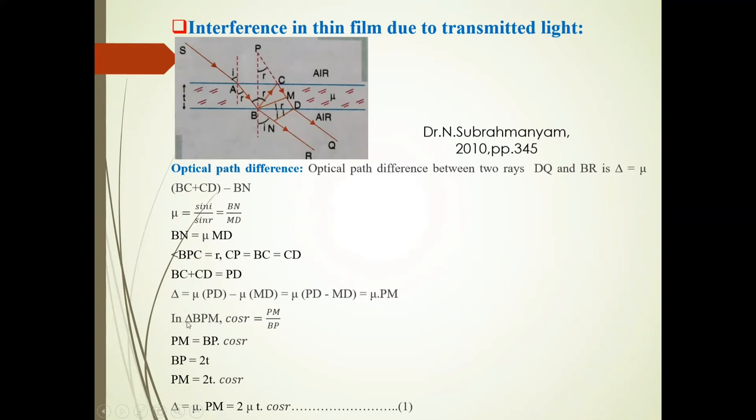In triangle BPM, cos R equals PM upon BP, so PM equals BP times cos R. BP equals 2T, so PM equals 2T cos R. Therefore, delta equals μ times PM, which is 2μT cos R. This is equation 1.